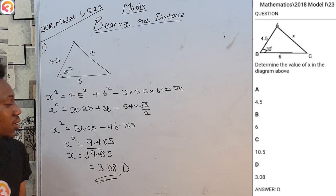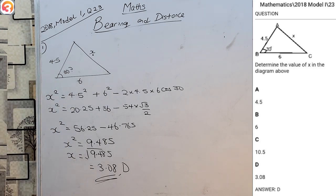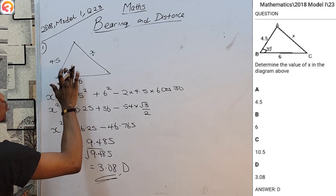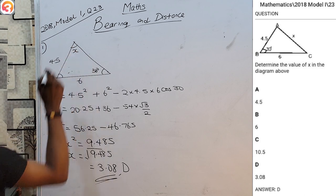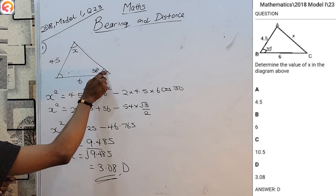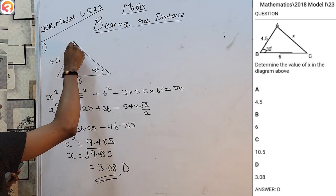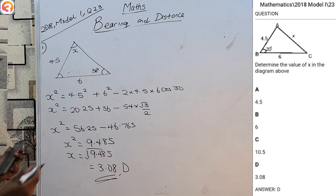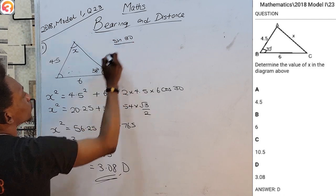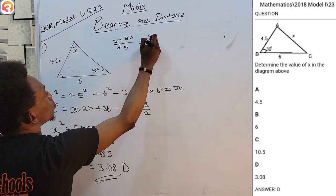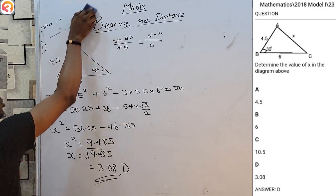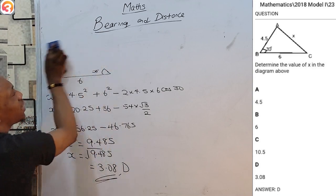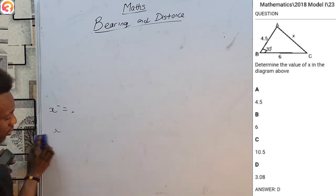Note: if we had known this angle as 30 degrees and were asked to find another angle instead of the third side, we would apply the sine rule, since we would know an angle and the side opposite it, as well as another side opposite the unknown angle. For example: sine 30 over 4.5 = sine x over 6. Either rule can be applied depending on parameters given. If both are possible, the sine rule is generally faster.